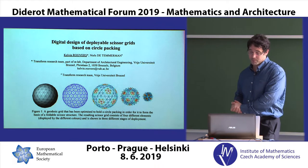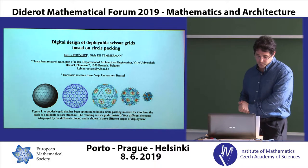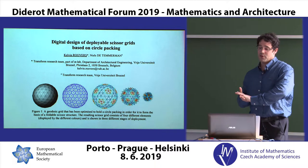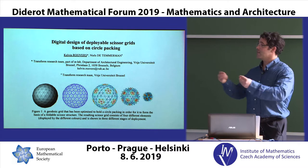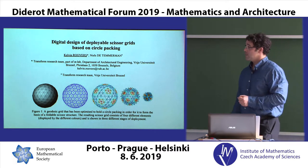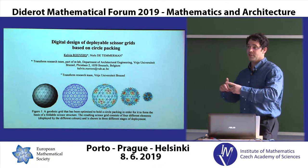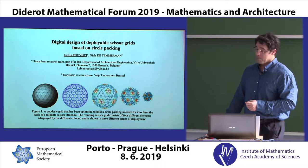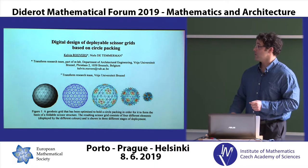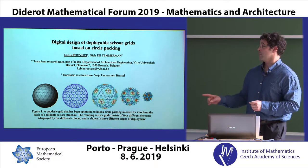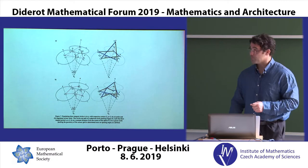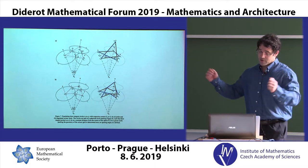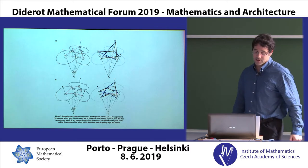Another application is deployable structures. The constraint that allows Chuck Hoberman's angulated scissor linkages — the expanding sphere toy — to work is closely related to circle packing. There's a nice paper that used Kangaroo to find some circle packings and then created these linkages so the system can expand and contract as a whole.